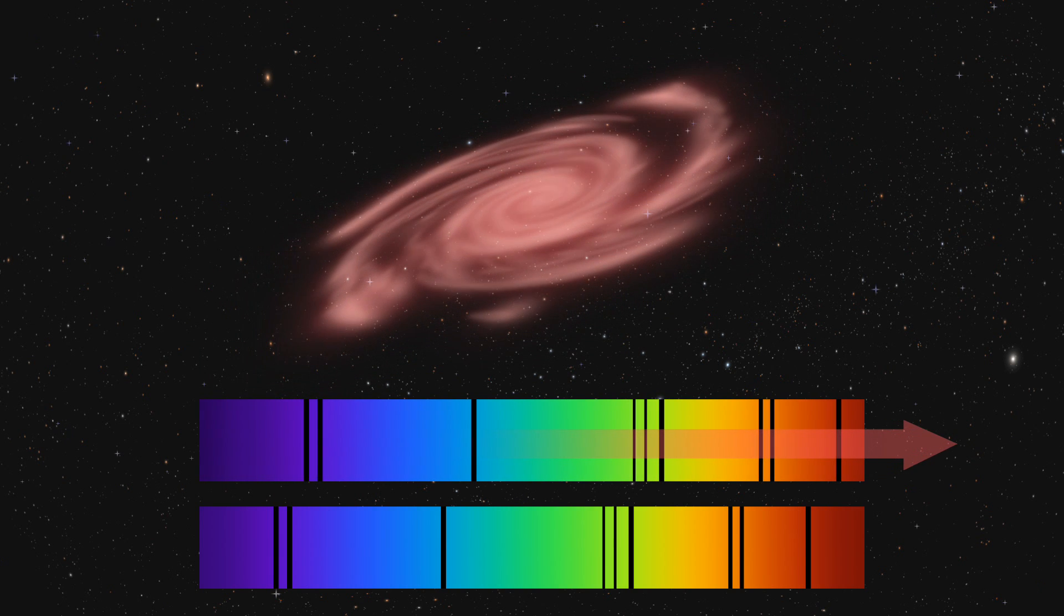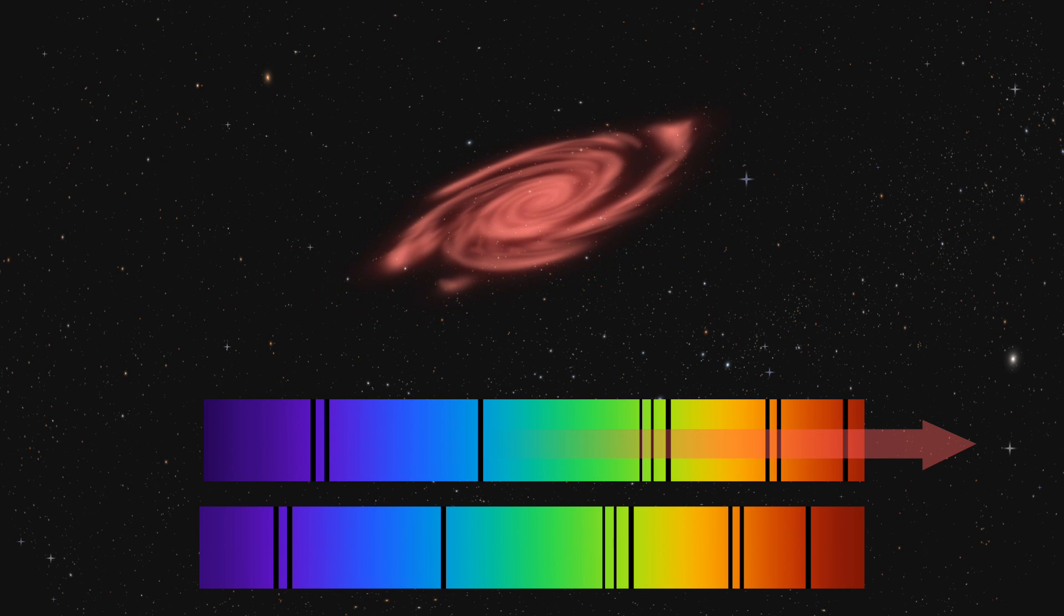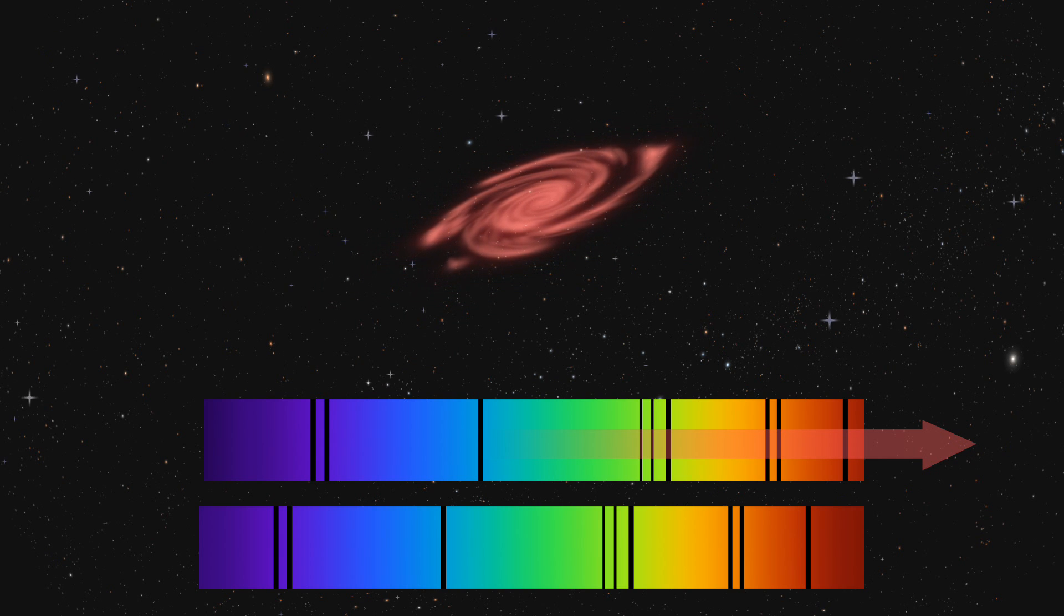The further the spectral lines are shifted, the faster the galaxy is moving away from the observer, and the further away the galaxy is from the Earth.